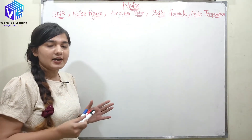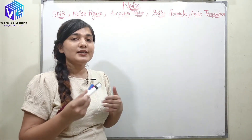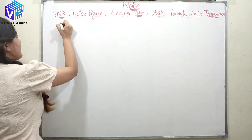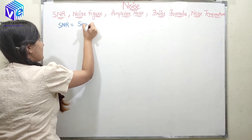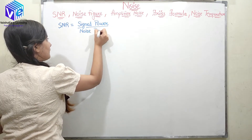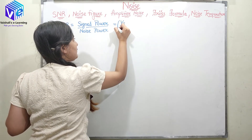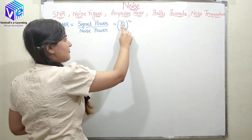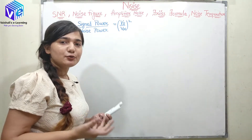The first term is SNR. As the name suggests, it is the signal-to-noise ratio — the ratio of signal power to noise power. So SNR = signal power / noise power. If I take the amplitude of the signal to be Vs and the amplitude of the noise to be Vn, then SNR = Vs² / Vn².